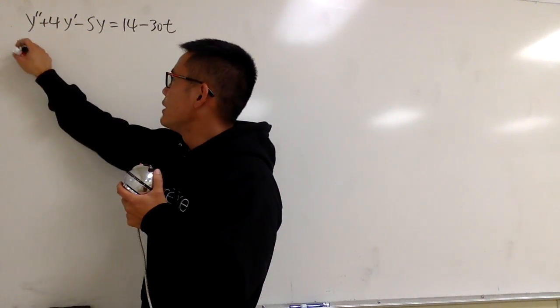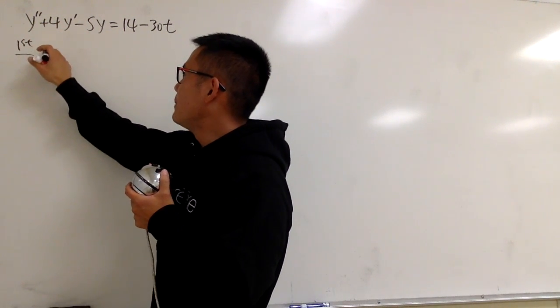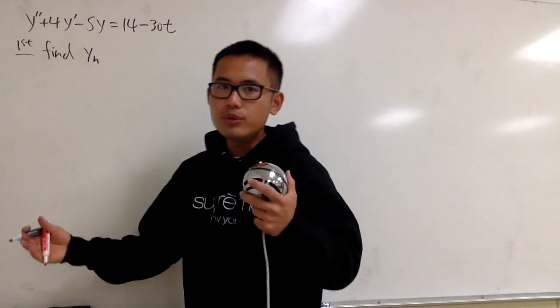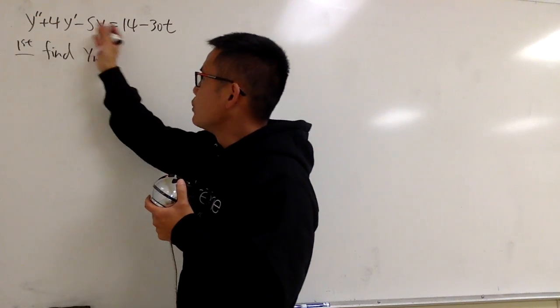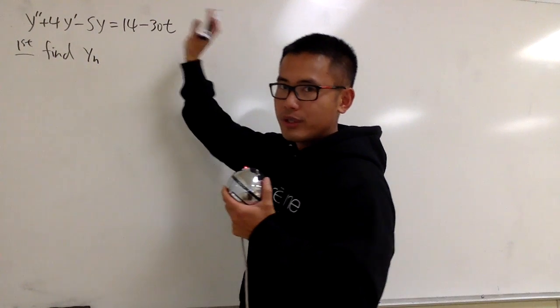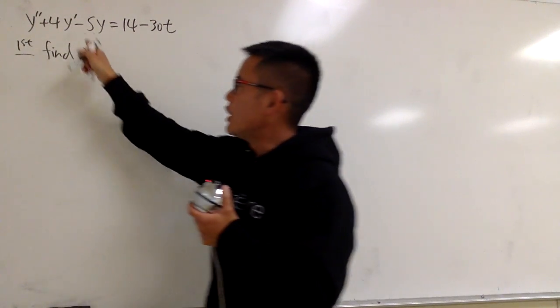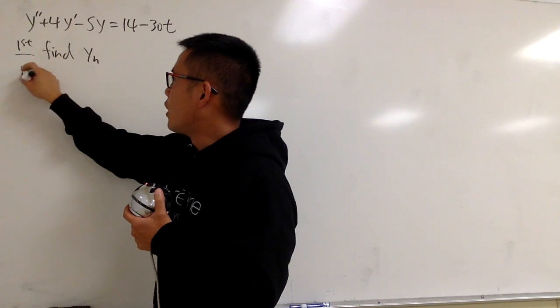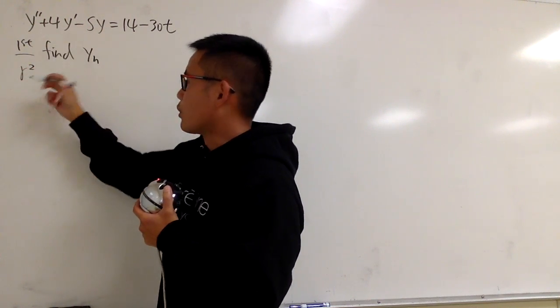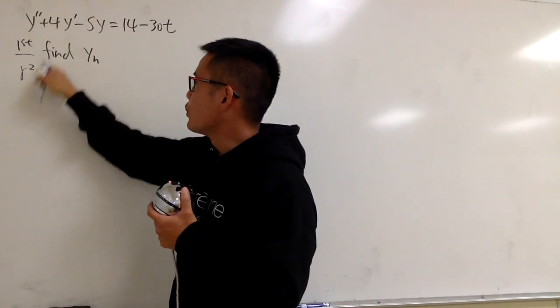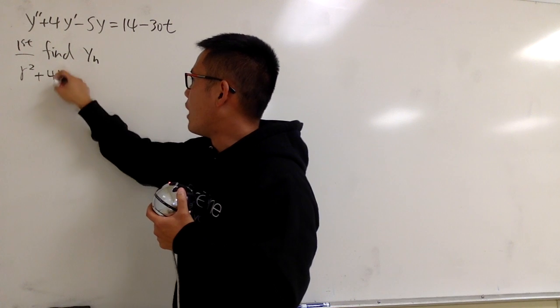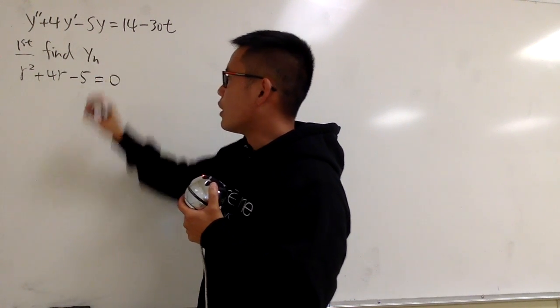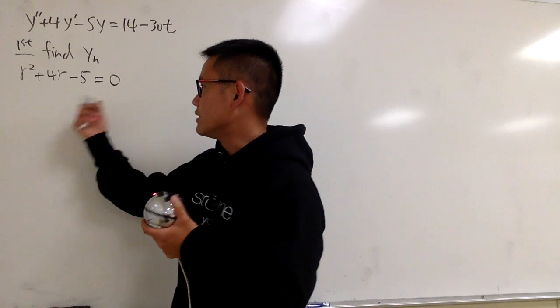So, let me just write down the steps for you guys. First step, I need to find yh. And to do so, I'm just going to look at the left-hand side, and then I will look at the right-hand side to be zero. And I'll change this to the r's. y double prime corresponds to r squared, and y prime corresponds to r, so we have r squared plus 4r, and then this is no r, so it's minus 5, and we make this equal to zero. And let's go ahead and factor this and solve.